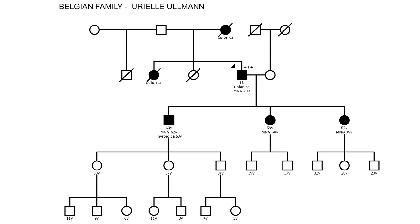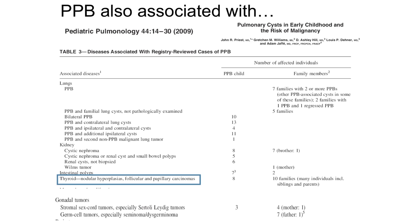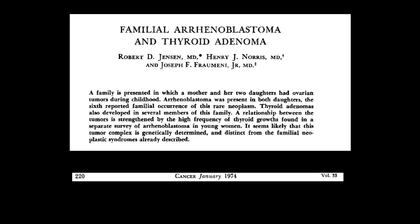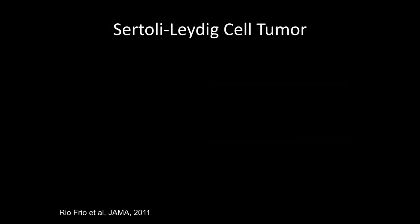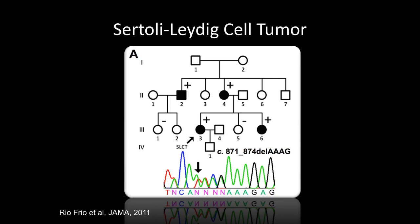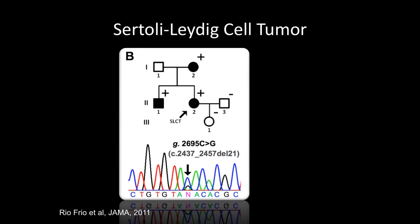From the original PPB paper by Jack Priest, an association with Sertoli-Leydig cell tumors was noted. Going back to the literature, a paper by Joe Fraumeni showed that Sertoli-Leydig cell tumors were already known to be linked to thyroid goiter or adenoma in 1974. We published in 2011 three families — one from Canada, one from Marek Niedzela in Poland, and one from Montreal where the woman had both goiter and SLCT. All three had mutations in DISA.